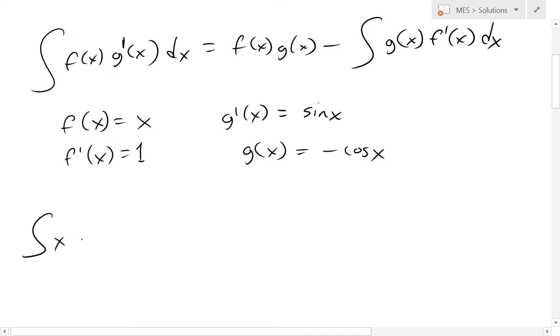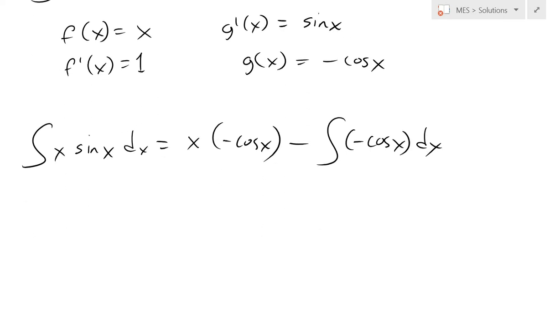Now we can plug in these functions. We get x sin(x) dx equals x times negative cos(x) minus the integral of negative cos(x) times one dx. Now we can begin solving this integral.